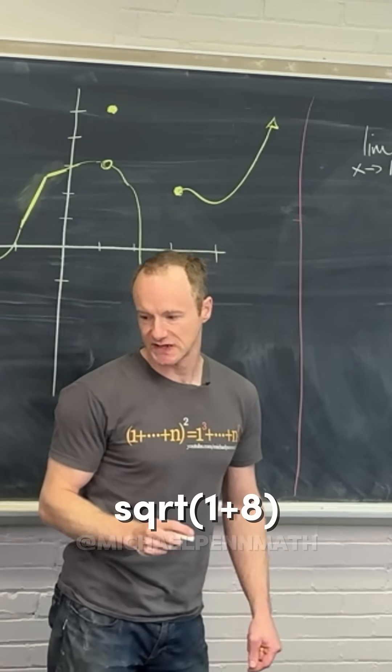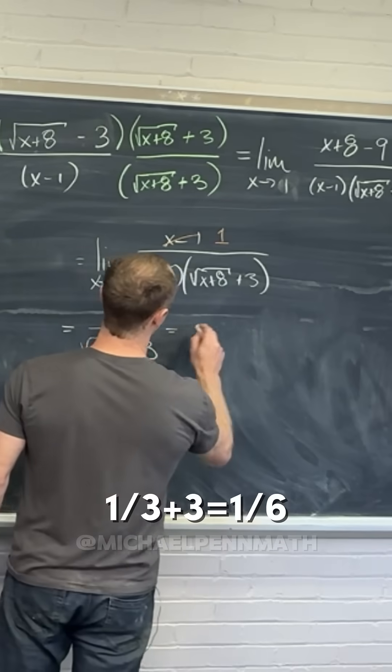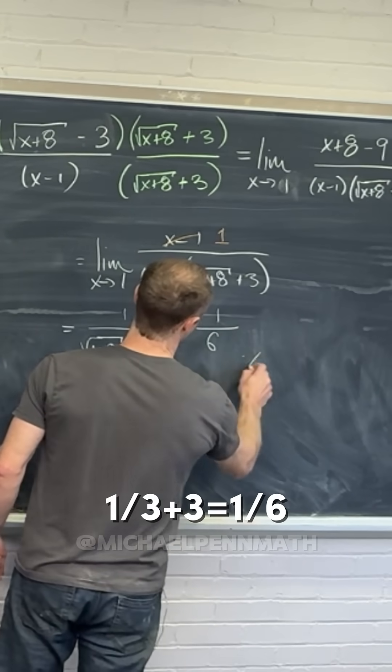The square root of 1 plus 8 is the same as the square root of 9, which is 3. So in the end we get 1 over 3 plus 3, which is 1 over 6.